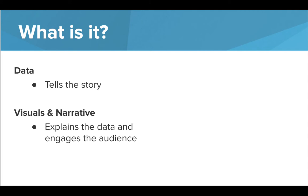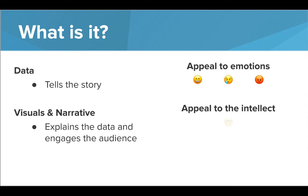A few ways to make a data story engaging is to appeal to the audience's emotion by focusing on data that is encouraging or, on the flip side, data that is anger-inducing. You can also choose to appeal to an audience's intellect by focusing more heavily on the data, logic, and reason rather than emotions. Another option is to appeal to an audience's sense of community — this type of story focuses on the people involved in the studies over the data or analysis.